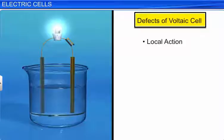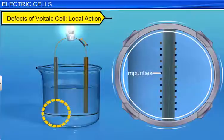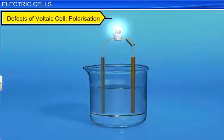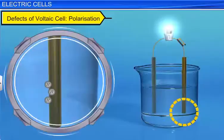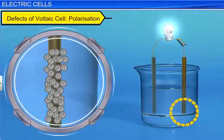The zinc used in the cell is not pure; there are carbon and iron particles in the zinc rod. These particles react with sulfuric acid, with zinc forming innumerable tiny cells, resulting in the formation of local electric circuits. This is called local action in a voltaic cell. When the cell starts functioning, the amount of hydrogen gas accumulated as a layer at the copper rod increases with time. The hydrogen restricts the flow of ions and gives rise to electrical resistance in the cell. Due to this, an electric current in the opposite direction is created. This defect is called polarization.